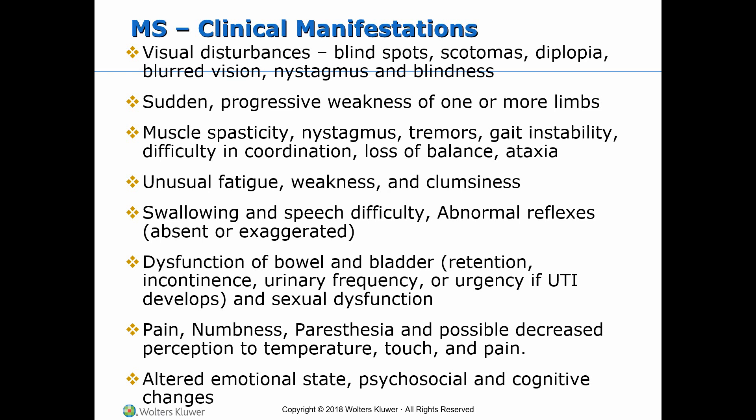The signs and symptoms of multiple sclerosis are varied and multiple, reflecting the location of the lesion, plaque, or combination of lesions. First, visual disturbances or blindness, which may include blind spots, nystagmus, scotomas or white spots in the visual field, diplopia, and blurred vision. There can also be sudden progressive weakness of one or more limbs.